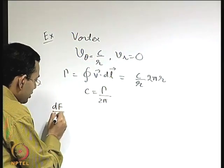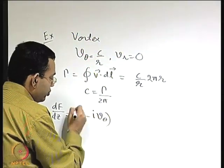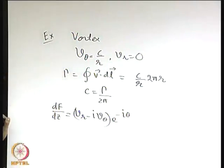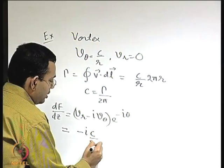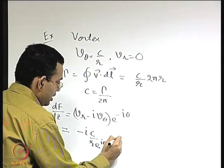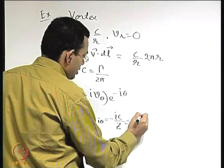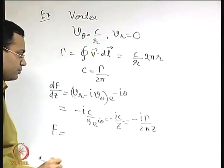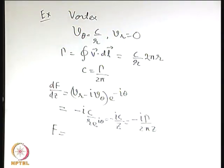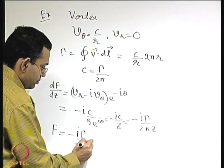Now, dF/dz = (V_r − iV_θ) · e^(−iθ), which gives −iC/r · e^(iθ), which simplifies to −iC/z = iγ/(2πz). So the complex potential F is F = −iγ/(2π) · ln z.